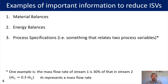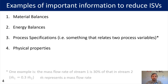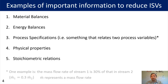Other pieces of information we can use are physical properties and stoichiometric relations. For example, if we know that for a reaction A + 2B → C, and A and B are being fed stoichiometrically, then if I know the amount of A coming into the system I also know how much B is coming into the system because I have stoichiometric amounts.